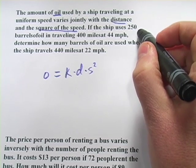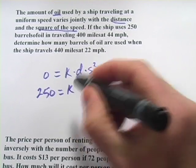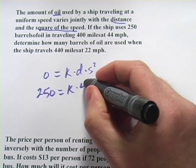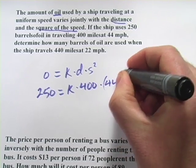If the ship uses 250 barrels of oil in traveling 400 miles, so that's our distance D, at 44 miles per hour, that's our speed, so that's going to get squared.